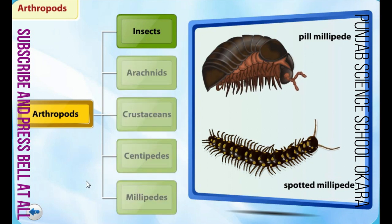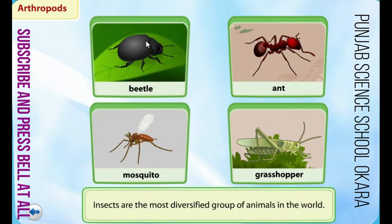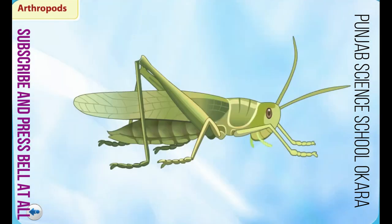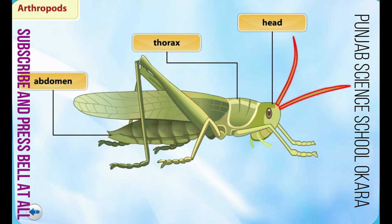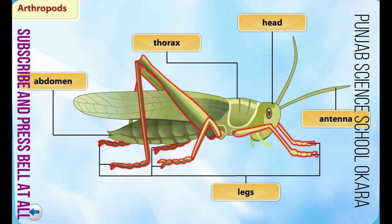The most numerous among arthropods are insects. Insects are the most diversified group of animals in the world. There are more species of insects than all the other land animals put together. The body of all insects is divided into three parts: head, thorax, and abdomen. All insects have a pair of antennae and three pairs of legs on their thorax.